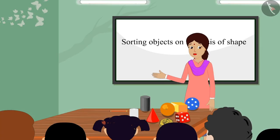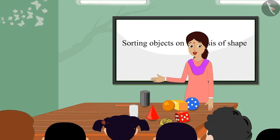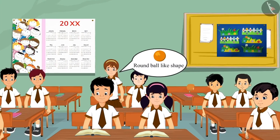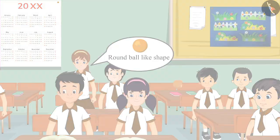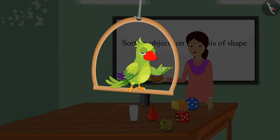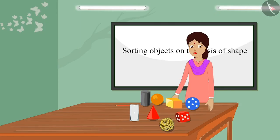The teacher shows objects and asks children to identify them. She holds up one object and asks: which shape does this object resemble? A child answers: this is a round ball-like shape. Well done, Arti — you are right, this has a round ball-like shape.